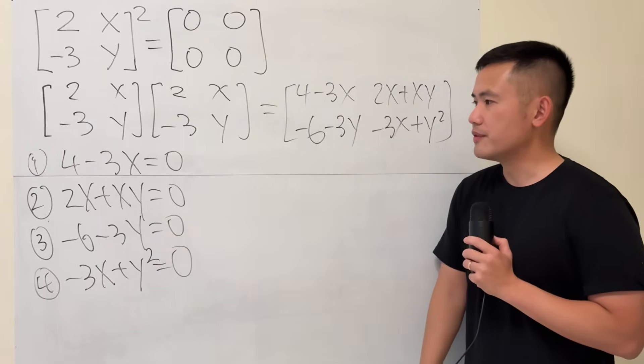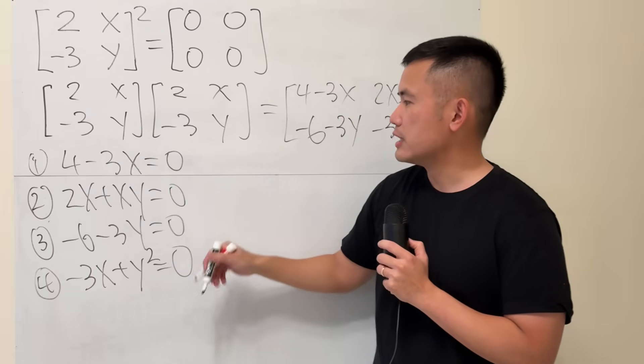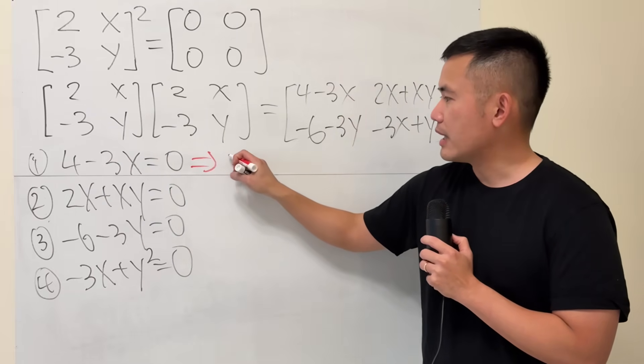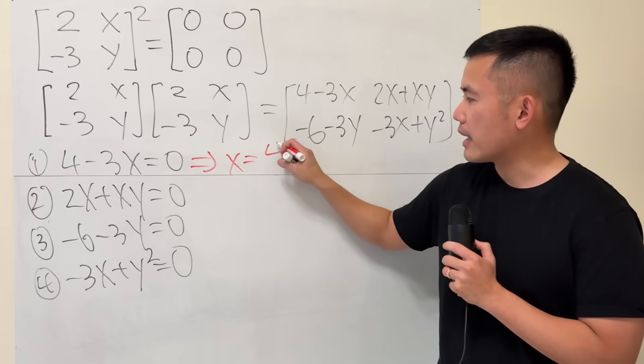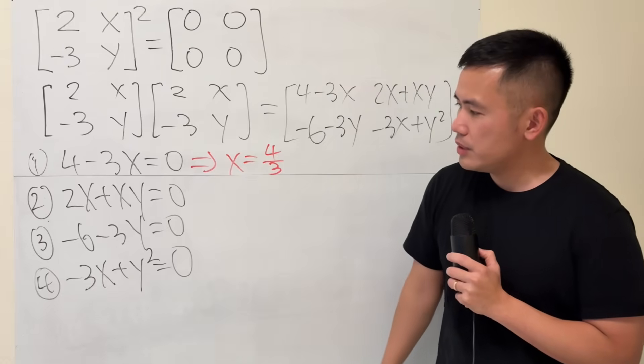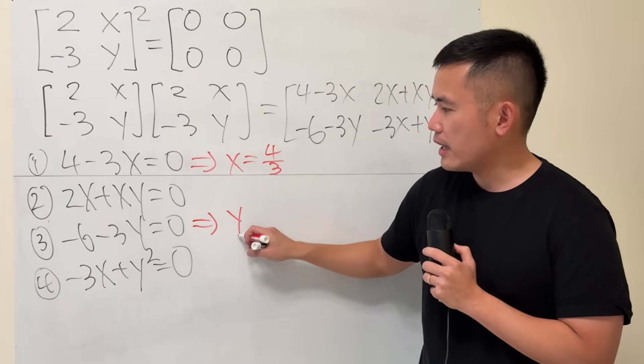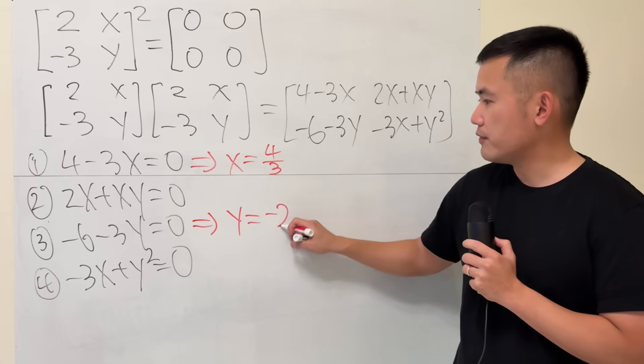And then, let's solve the easy equations first. From number 1, if you move the 3x to the other side and then divide both sides by 3, then we must have x is equal to positive 4 over 3. And then, from equation number 3, again, do the usual thing. You will see that y has to be negative 2.